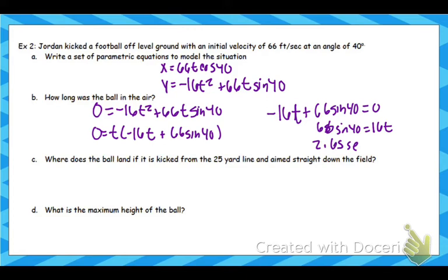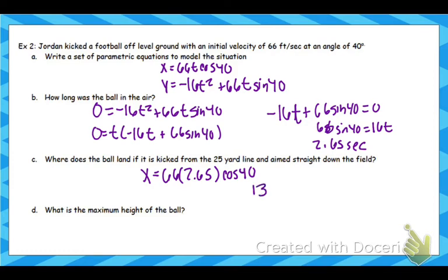Now let's go ahead and look at our next question. How far does it land? We know how long it's in the air for, so to find how far away horizontally it goes, take your x equals equation, plug in that t value, and just do that calculation. So 66 times 2.65 cosine 40, and that's going to tell you it's going to go about 133.98 feet away.